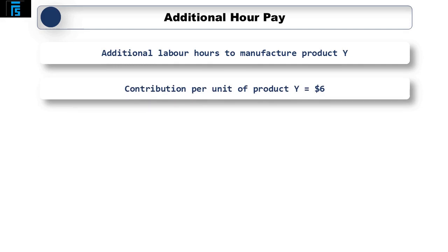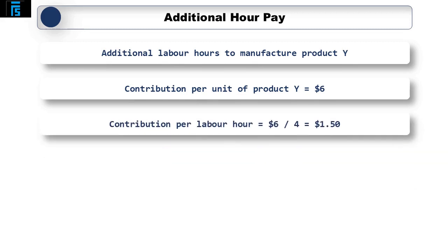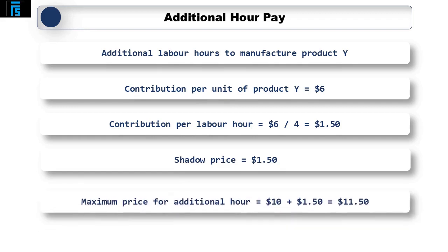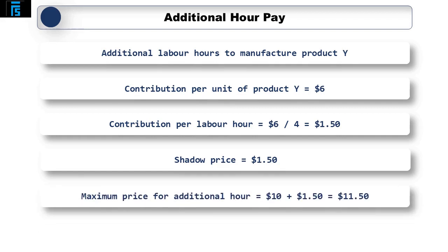The contribution that would be earned per additional unit of product Y is $6. Therefore, the additional contribution per direct labour hour would be $6 divided by 4 hours, which equals $1.50. This is the shadow price — the maximum extra that the company would be prepared to pay for an additional hour of labour. Therefore, the maximum price the company would be willing to pay for each additional hour would be $10 (the normal direct labour rate) plus the shadow price of $1.50, which equals $11.50.